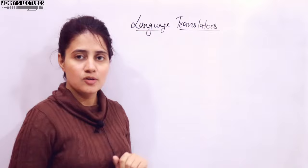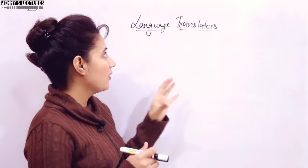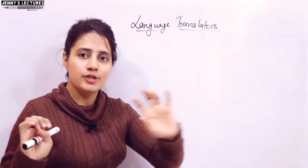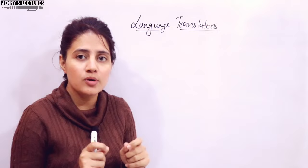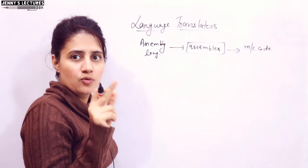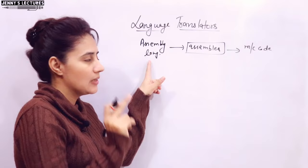So we are going to discuss all the types of language translators in this video. There are three translators: assembler, compiler, and interpreter. An assembler is used to convert a program written in assembly language into machine code or object code. Machine code means zeros and ones. So an assembler is a computer program that converts a program written in assembly language into machine code or object code.